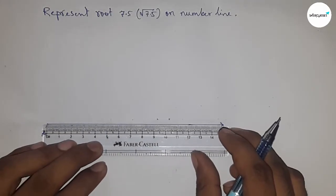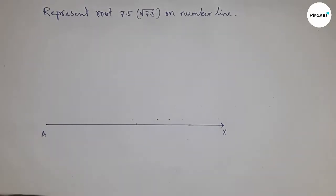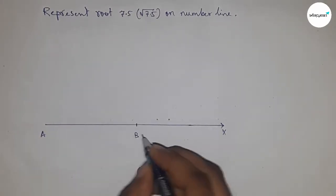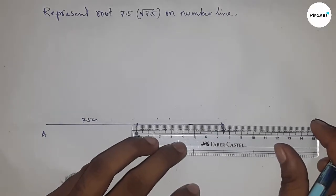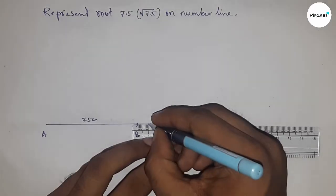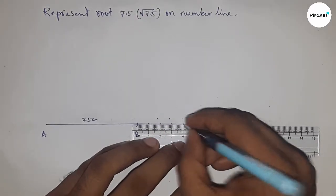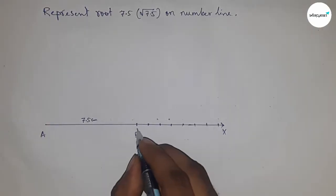So this is 7.5 centimeters, so AB equals 7.5 centimeters. Next, having to mark the numbers on the line from B to X by using a scale. So this is 0, 1, 2, 3, 4, 5, 6, 7, and taking this as point C.